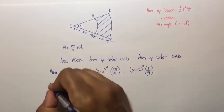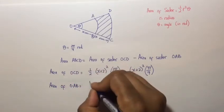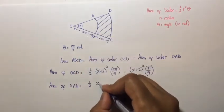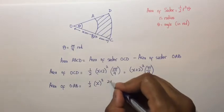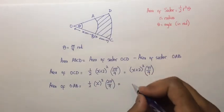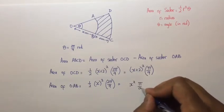The area of OAB is equal to half times R, which in this case is x, squared, times theta which is 2π/9. So that equals x² times π/9.